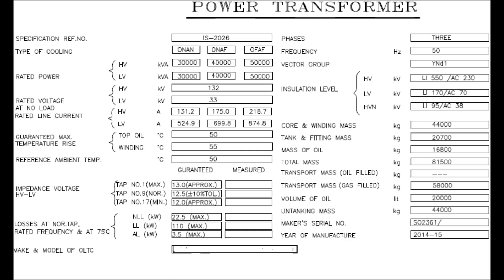Hello friends, today I will discuss about nameplate details of a power transformer. In this video I will discuss about nameplate details of a power transformer of rating 50 MVA capacity, with rated voltage of HV side winding at 132 kV and LV side voltage at 33 kV, and vector group of YNd1 type.